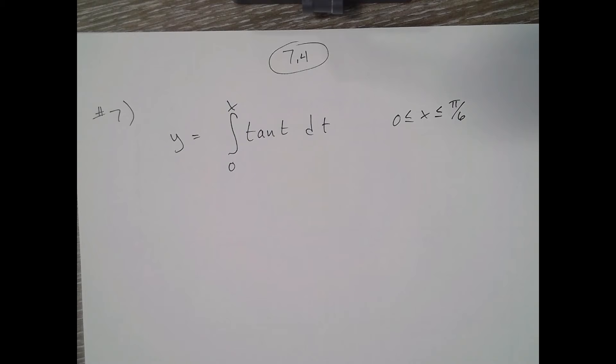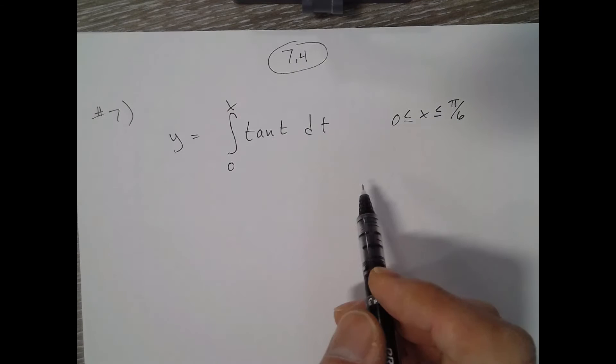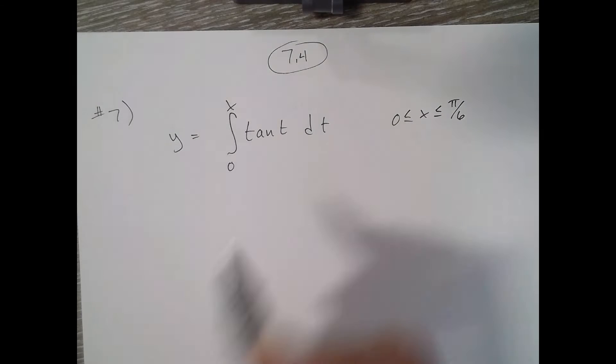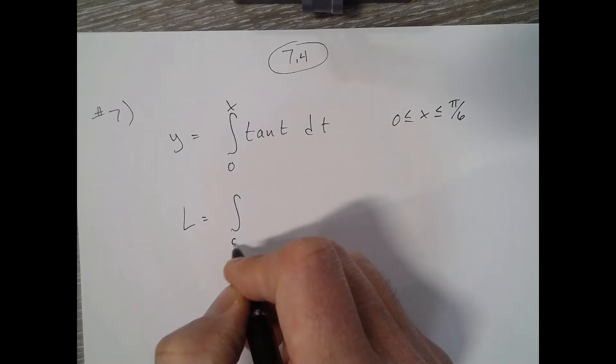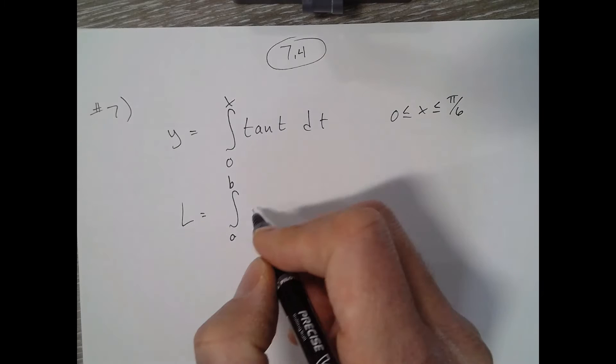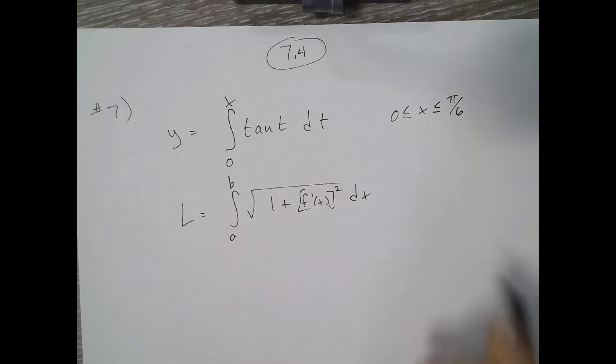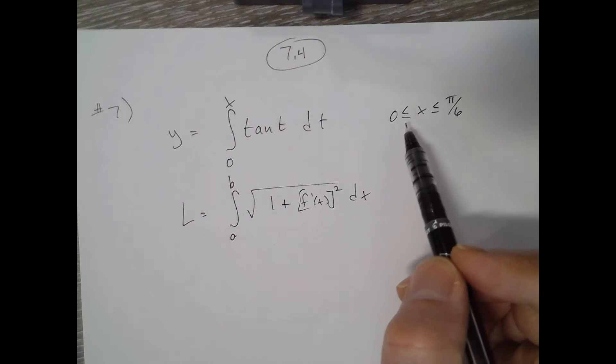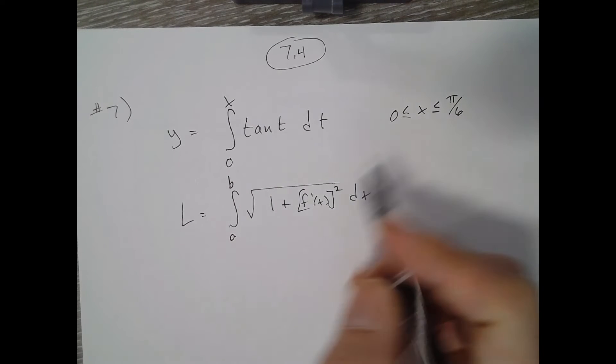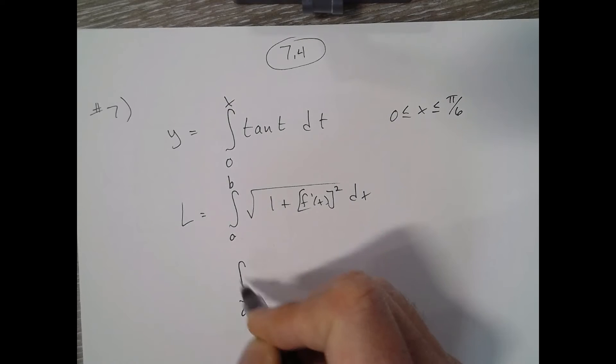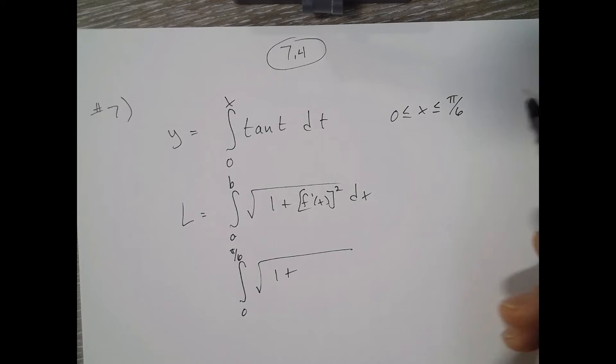I don't know if I'll show you that either, but I'll set up the integral. So arc length is the integral from a to b of the square root of 1 plus the derivative squared dx. Here we're going from 0 to π/6, and it's the square root of 1 plus whatever the derivative is.